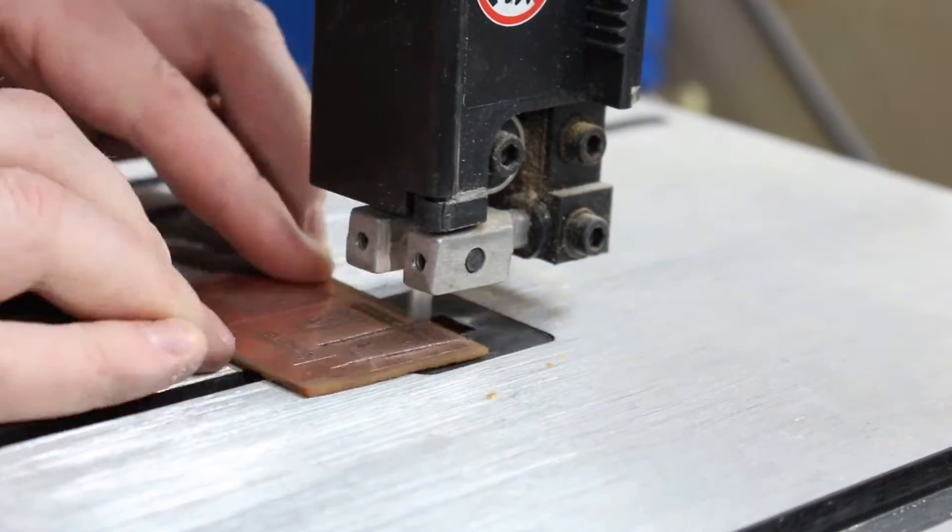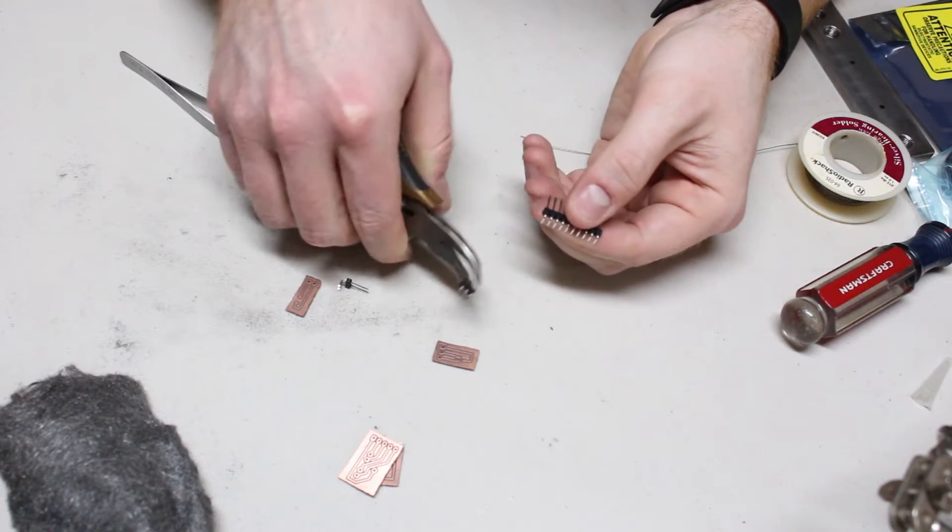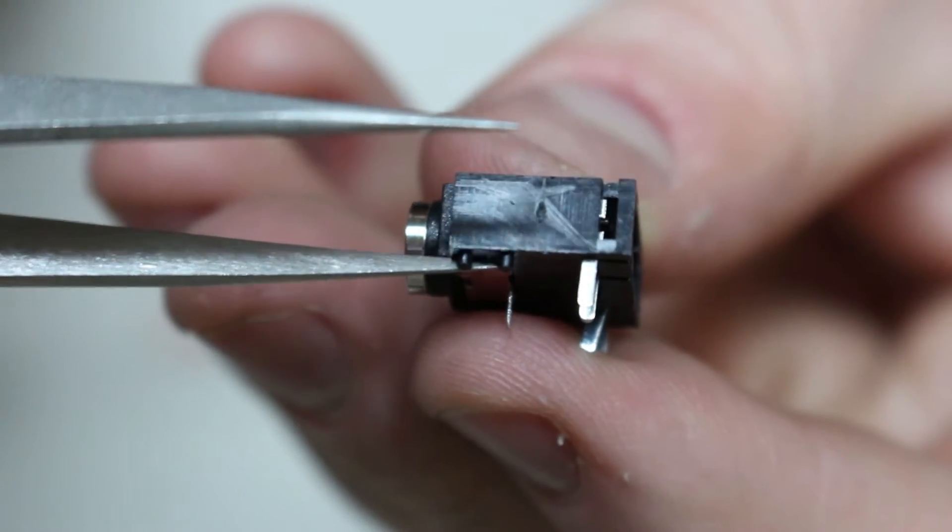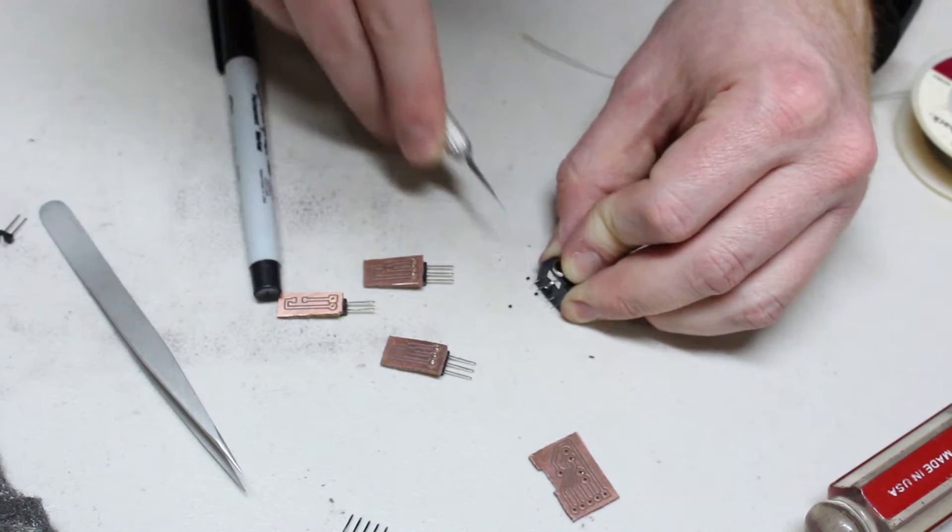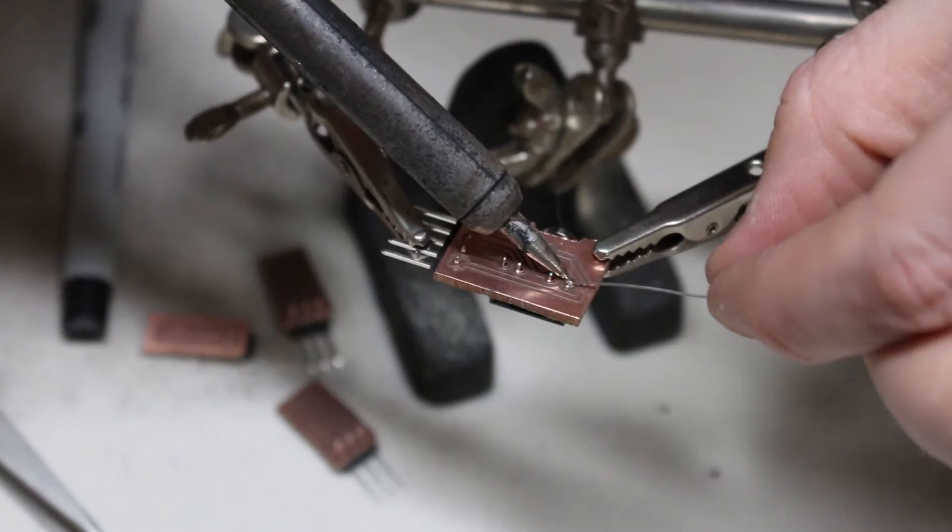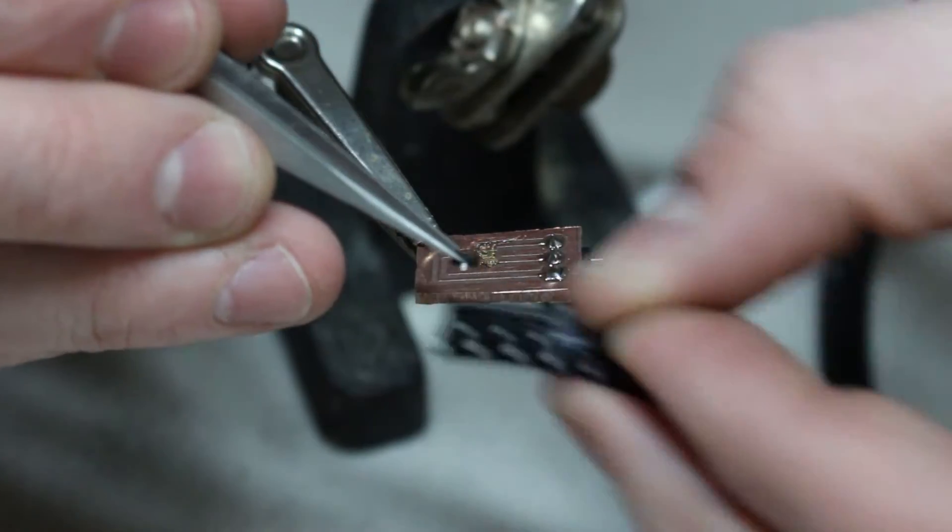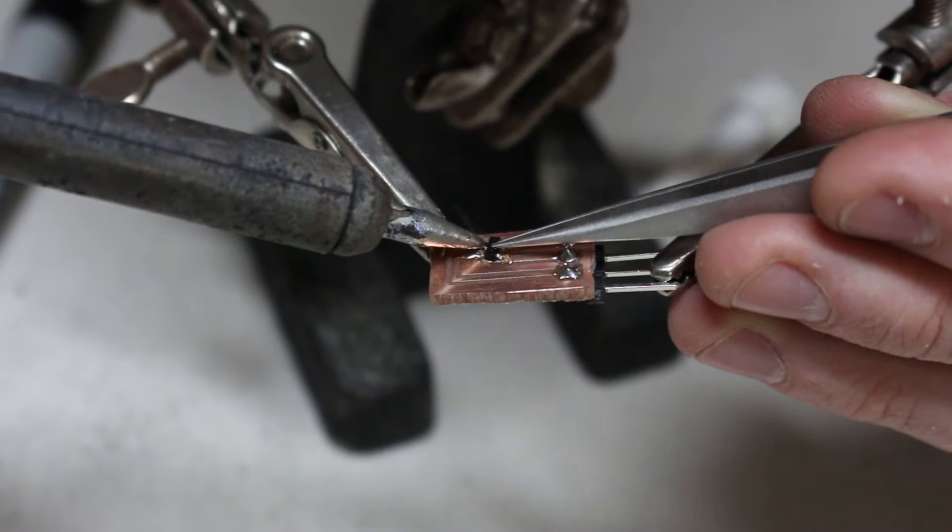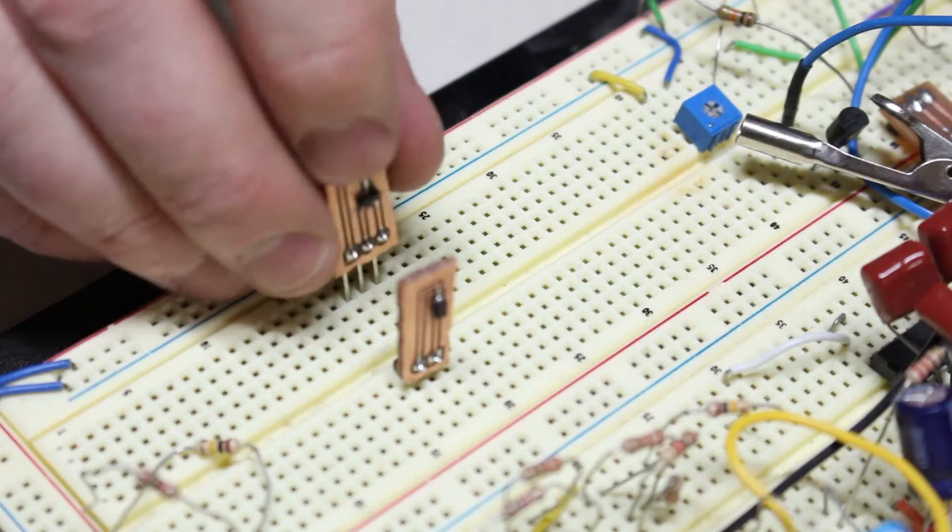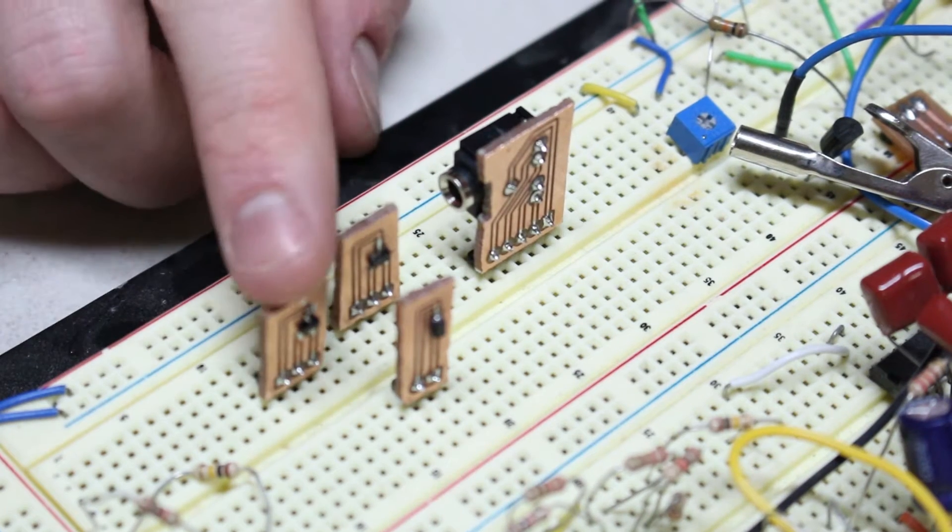Then I cut the board up into pieces and start to mount the small components. Some of them require modification. Then I solder those components into place. These boards are really helpful for surface mount devices because then I can plug them into a breadboard for testing.